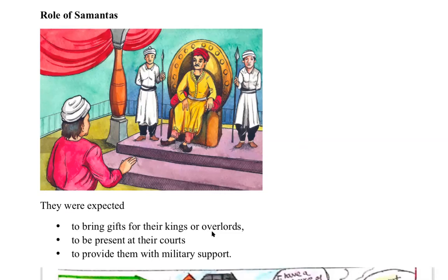Now, Dantidurga had overthrown the Chalukya overlord. He was a Rashtrakuta chief who then performed a ritual called the Hiranyagarbha, which means 'golden womb.' When this ritual was performed with the help of Brahmanas, it was thought to lead to the rebirth of the sacrificer as a Kshatriya, even if he was not one by birth. So Dantidurga was not originally of the warrior class, but through this ritual he came out as a Kshatriya.